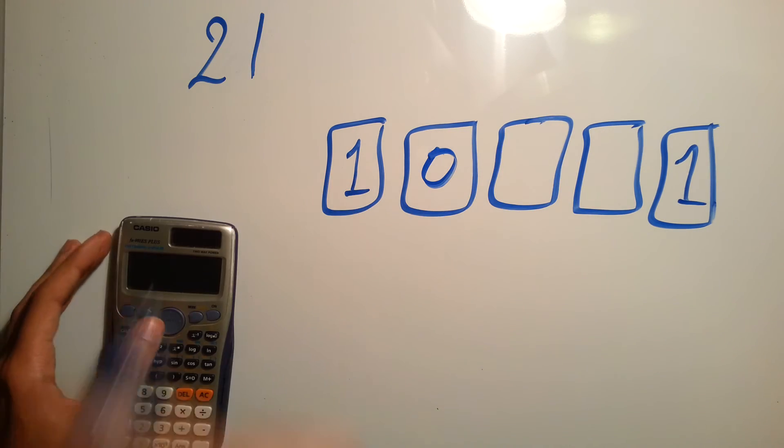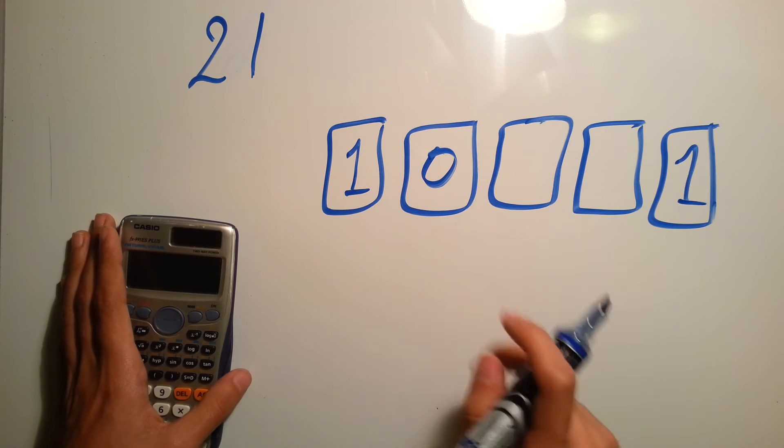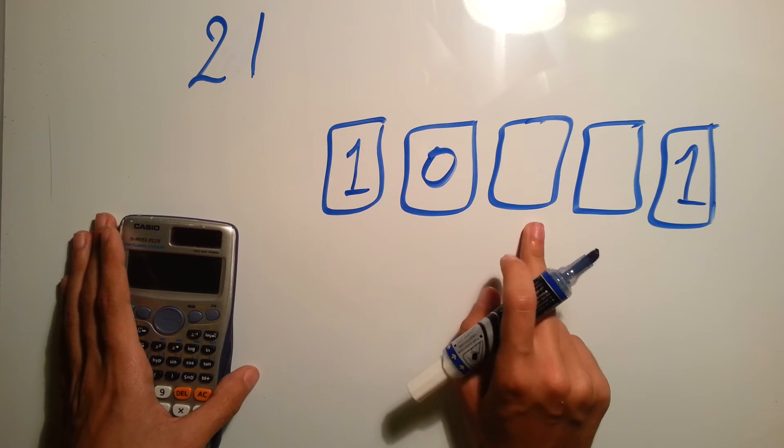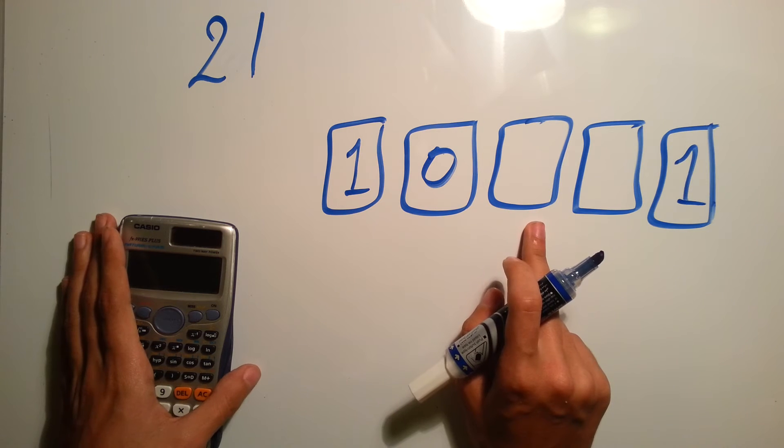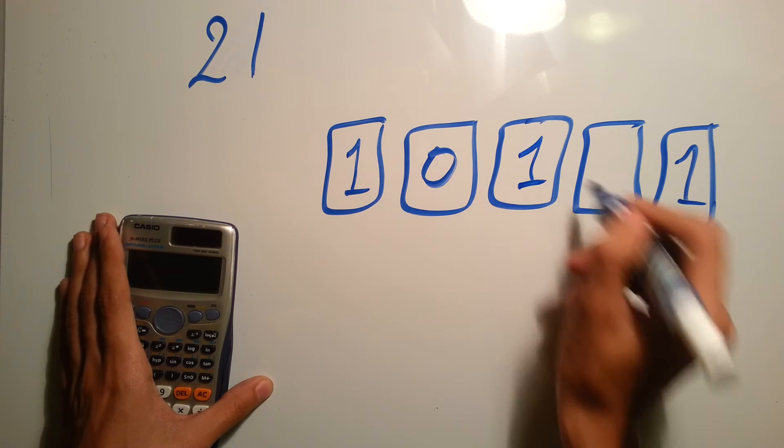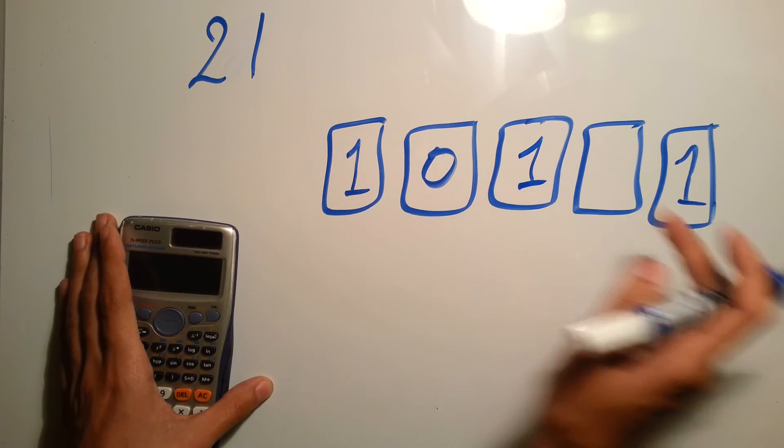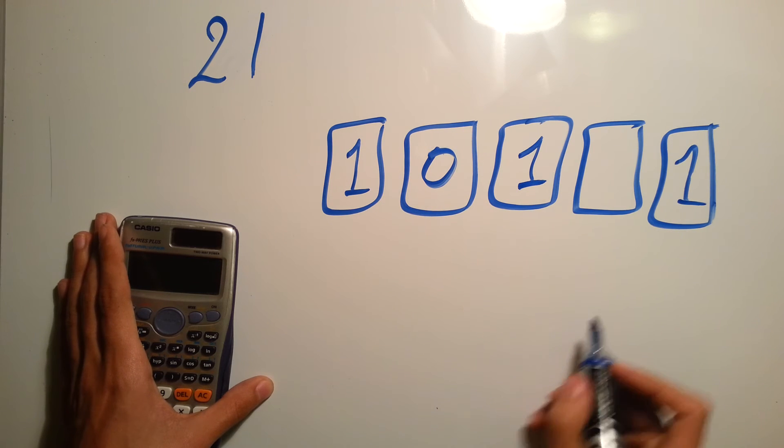And then 16 plus 8 gives you 24, then definitely this will be zero because otherwise it will exceed the value. So it's 21, so it's 4. 4 plus 16 gives you 20, then this will be 1.